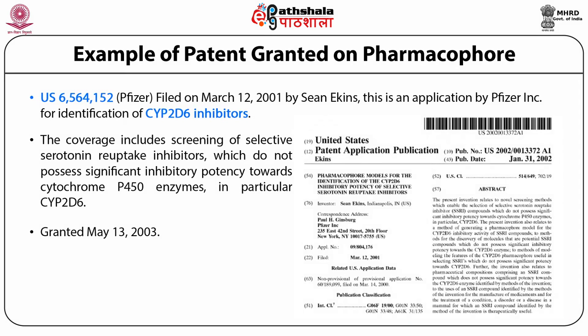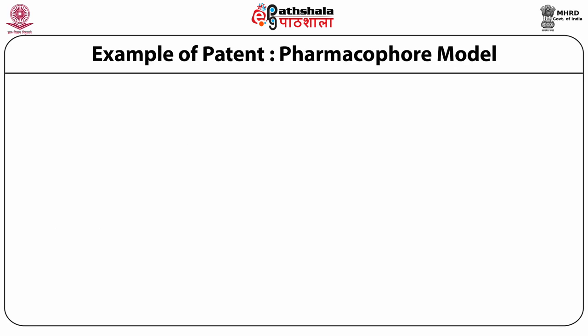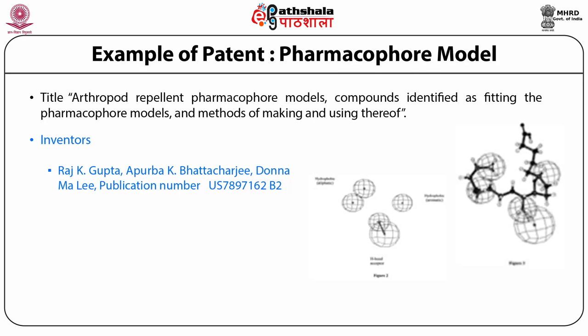Two patent examples follow. First, Pfizer patented a set of CYP2D6 inhibitors — the chemicals were not available in the patent, but the pharmacophore was patented. The second example is a more recent patent for an arthropod repellent pharmacophore model — a mosquito repellent kind — also done with a pharmacophore where only the hit chemical and the pharmacophore are shown, not the chemical structures.